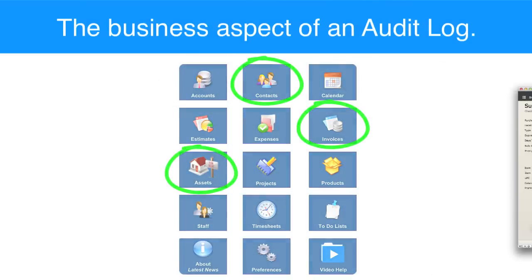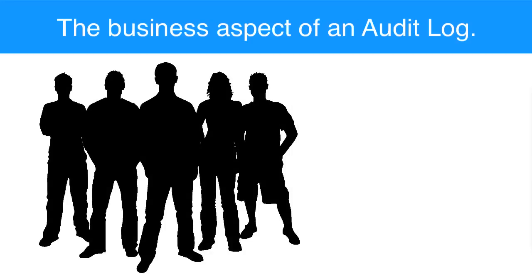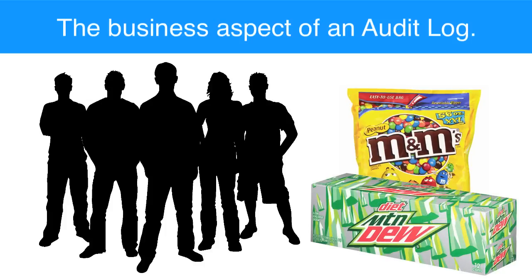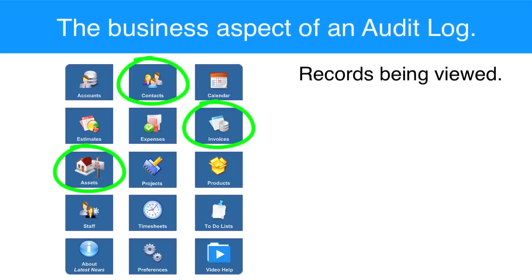If you have a database that tracks snack food purchases within your company, that may not require top-level security with Encryption at Rest, point-to-point encryption, and a full audit trail. Most organizations will be able to identify the critical areas where they really need to track what users are doing, what records they're viewing, and maybe what records are being edited.